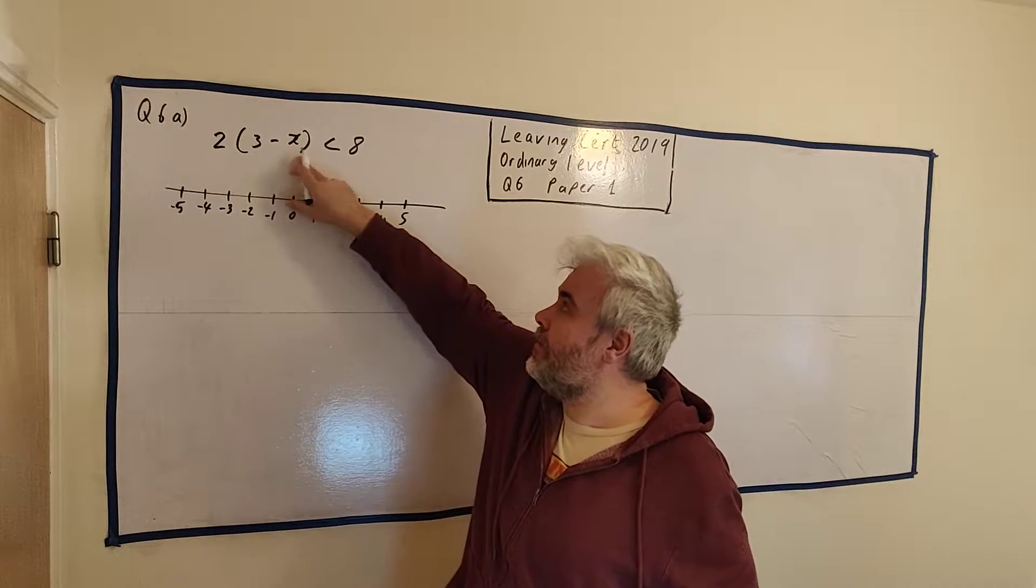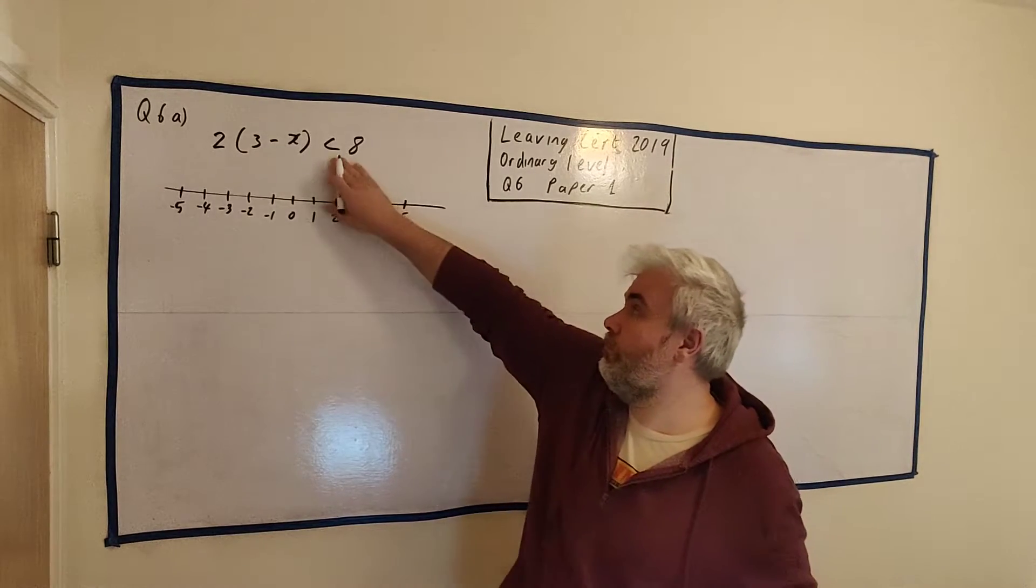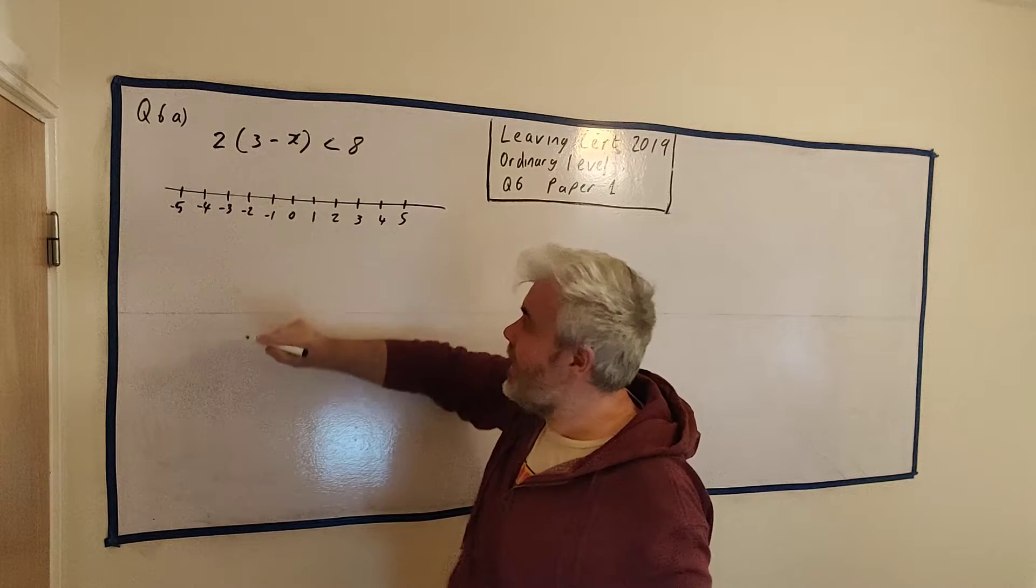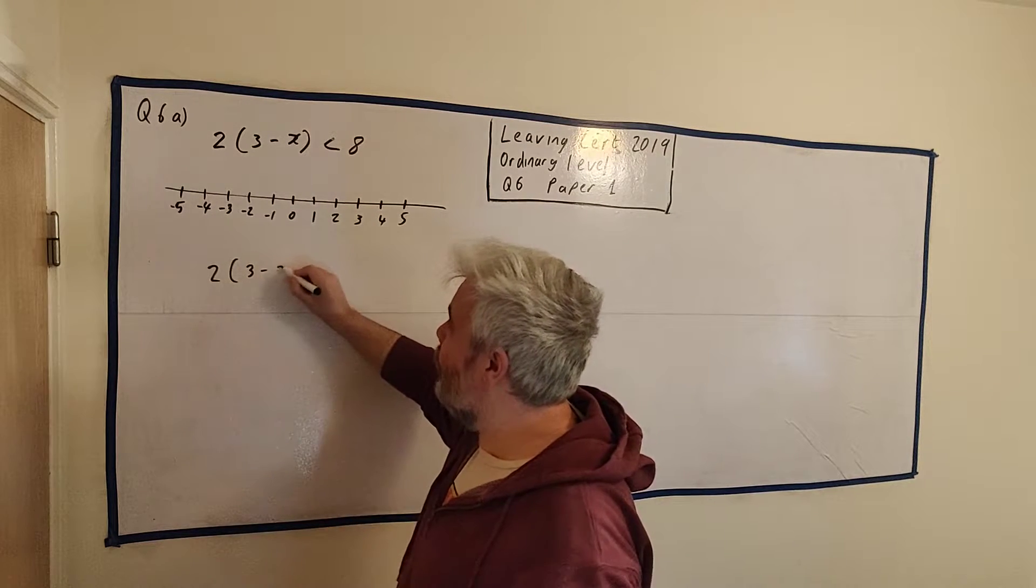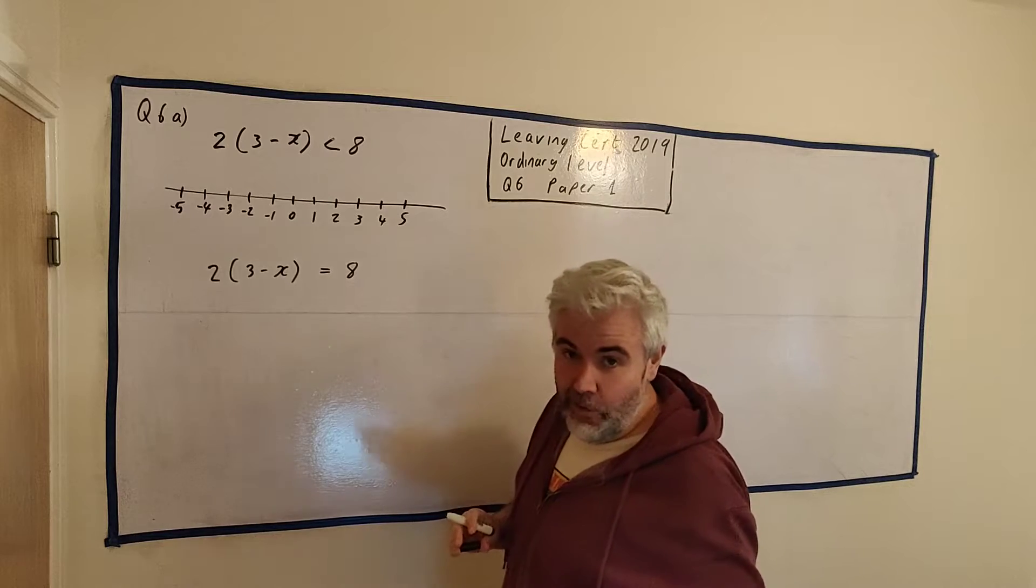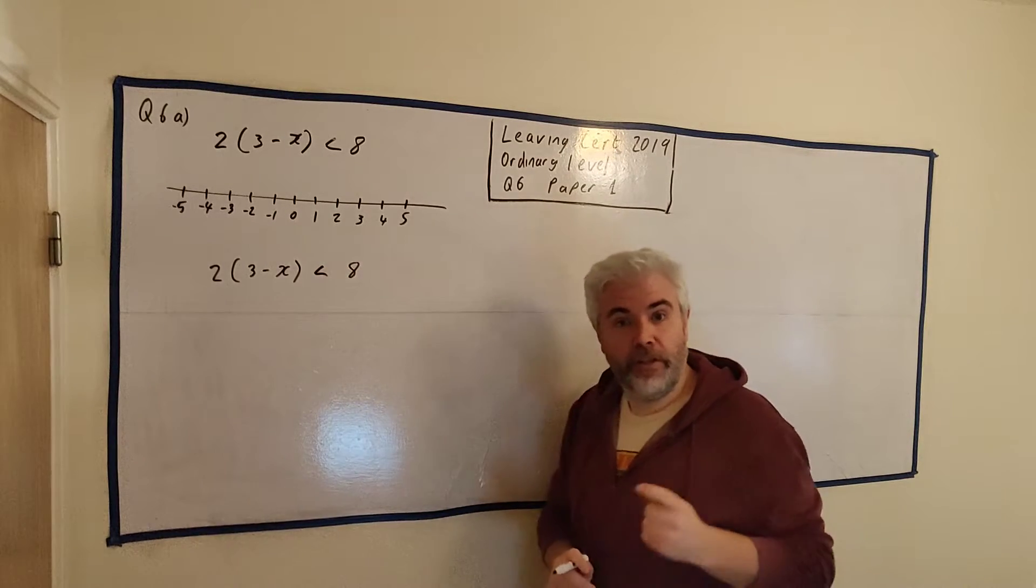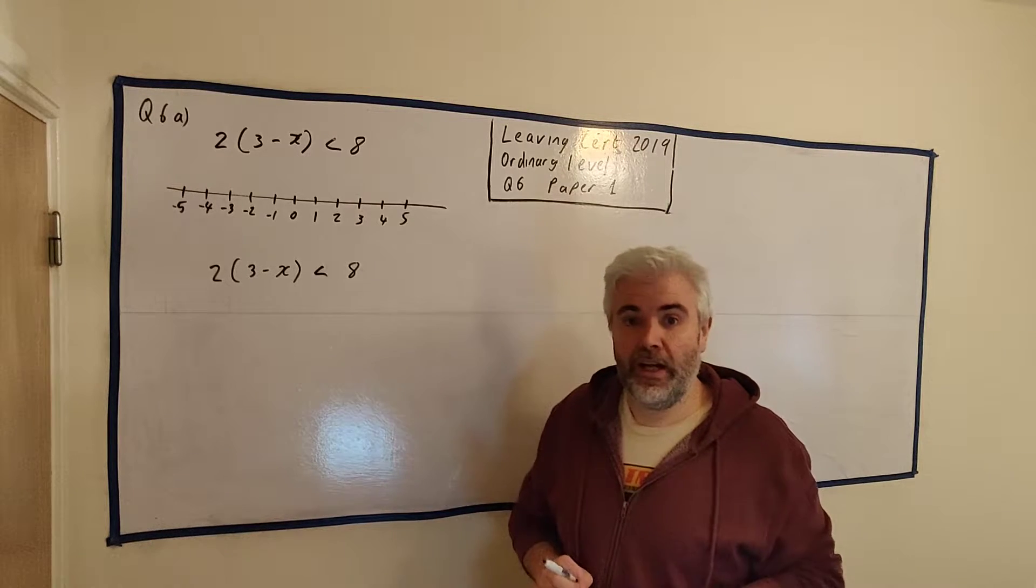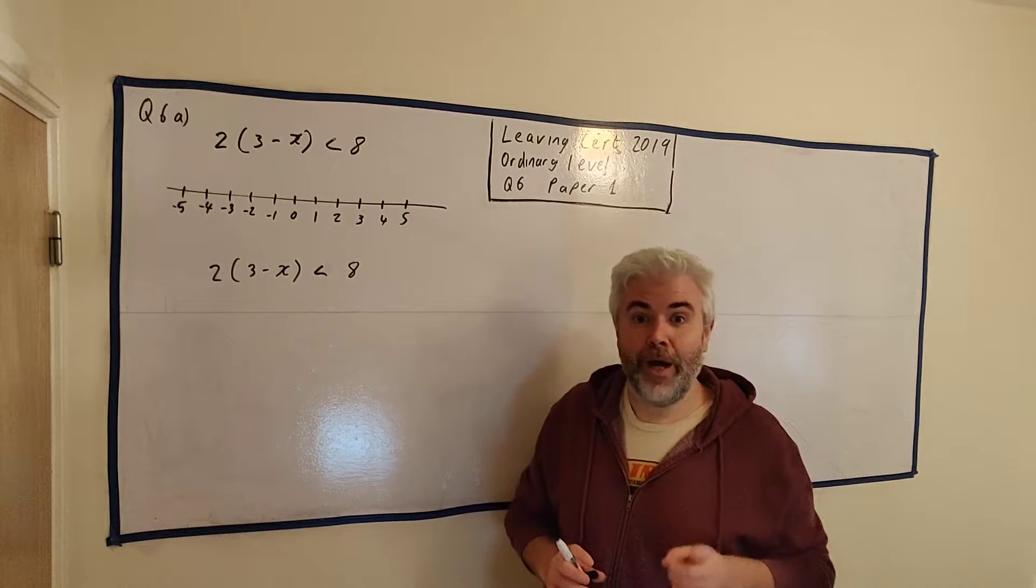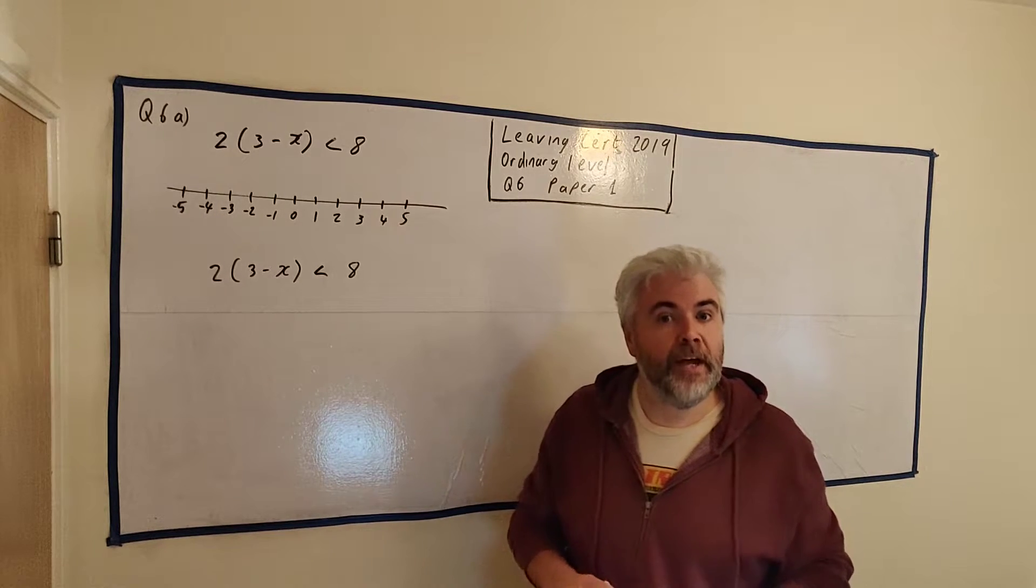Here is part A on the board right now. We have 2(3-x) < 8. Now the problem most students get with inequalities is they just become worried by them. One thing I'd like to say is we can deal with them just like there was an equals here, except for one small difference. If we multiply or divide by a minus number, you need to change this direction. And that's it. Everything else will work the same as if we had an equals.